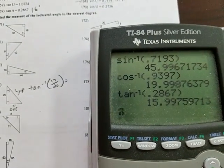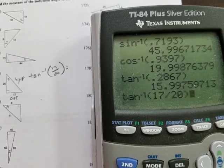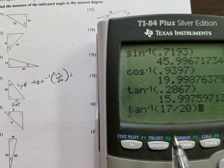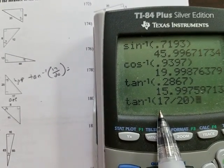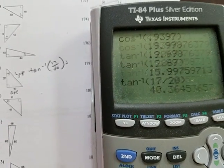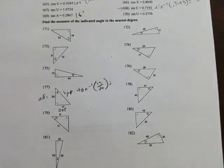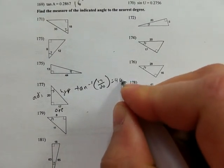So inverse tangent of 17 over 20, close my parentheses because I got to make sure that my calculator knows that I want inverse tangent of this whole ratio and not just the first number. And that tells me 40.36. So to the nearest degree, that is 40 degrees.